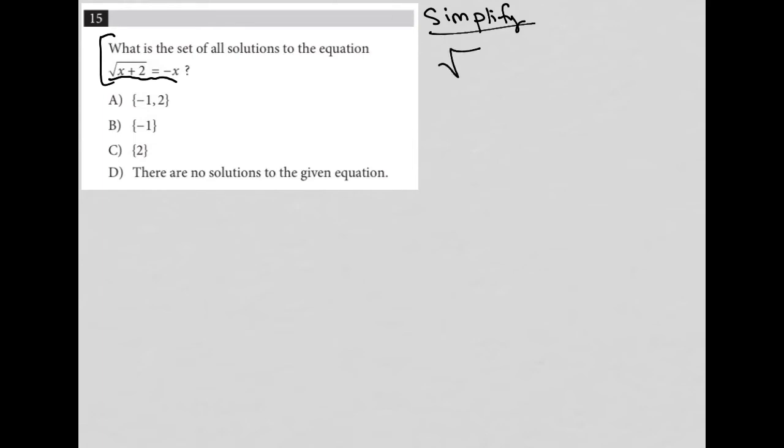I'm going to rewrite that equation. It's square root of x plus 2 equals negative x. The question is asking what is the set of all solutions to the equation. In essence, that's asking what are the values of x, what does x equal?